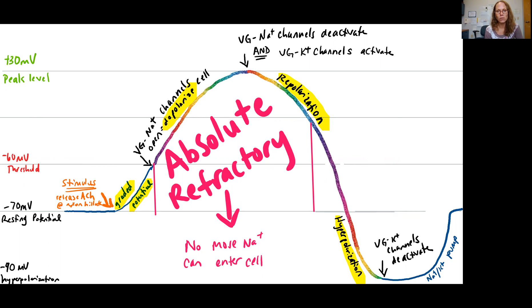Then at plus 30 millivolts, those channels close or deactivate and they can't be stimulated to open again until the end of the absolute refractory period. So the membrane has to get to a certain voltage before they can be activated again. You have that whole chunk of time when the cell, the membrane, cannot be stimulated again.